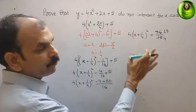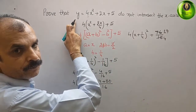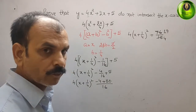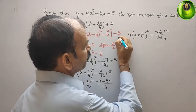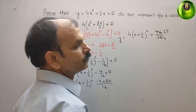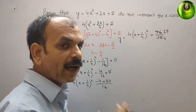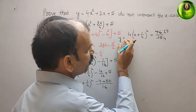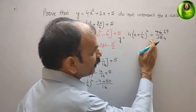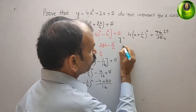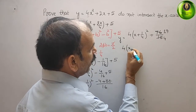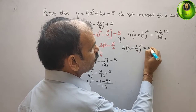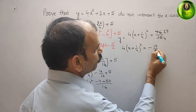So this simplified expression is nothing but your y. We can write y = 4(x + 1/4)² + 19/4. Now take y = 0: this side becomes 0, so bringing 19/4 to the right side we get 4(x + 1/4)² = −19/4.